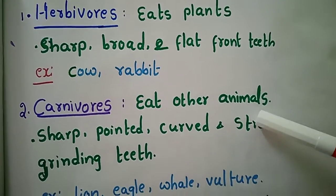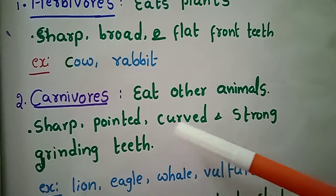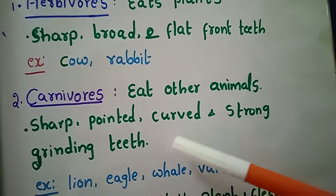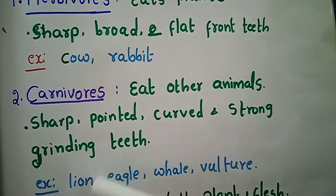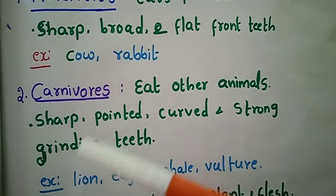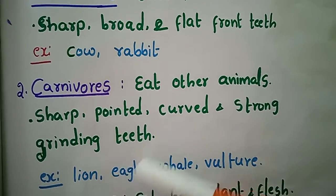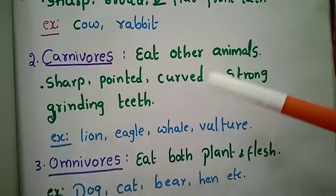Examples of carnivores include lion and fox. They have strong grinding teeth to process their food. Other carnivore examples are lion, eagle, and vulture.